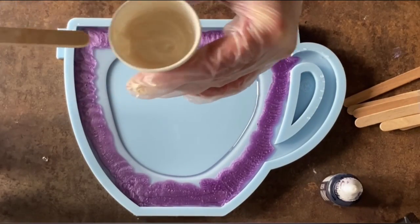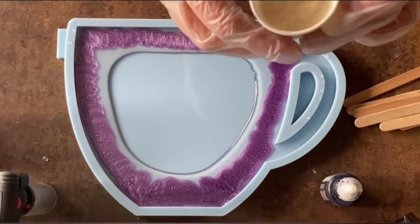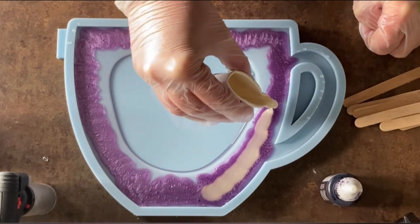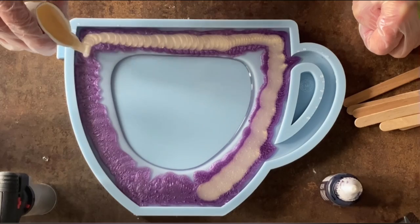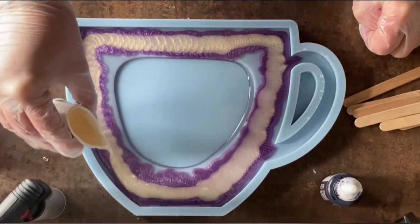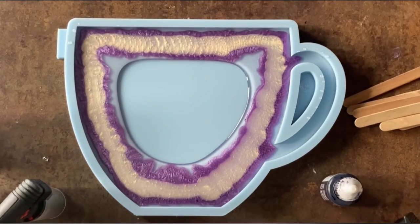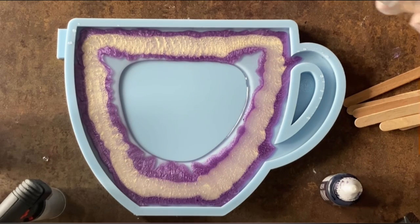And my next color is the Interference Gold from Laura's Art Corner. Yeah Laura, I just love this color so I need to use it. I'm also pouring rather thick on top of my lavender color, and then I'm taking the clear resin.